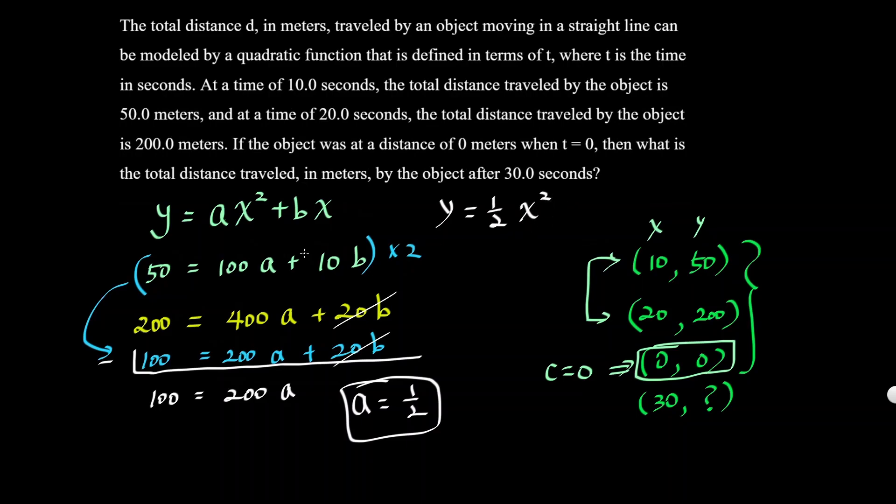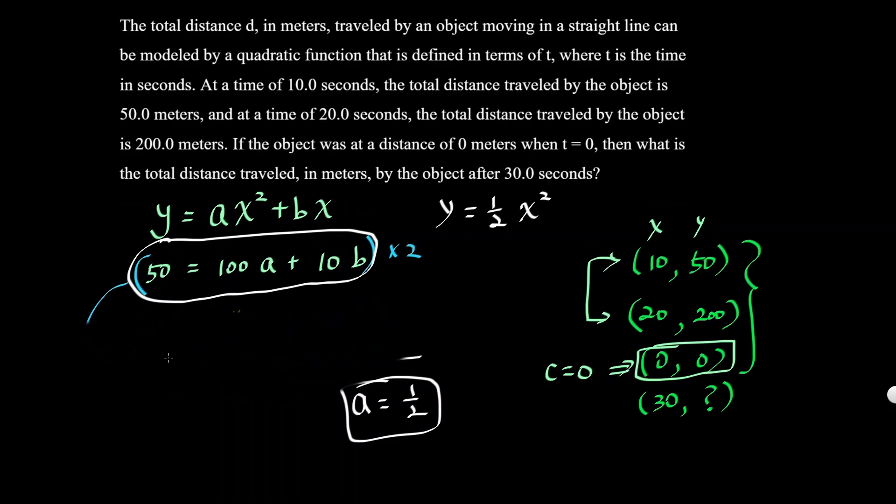We have to figure out what b is. Let's use this equation. If we plug in 1/2 for a, we have 50 = 100(1/2) + 10b. That's just going to be 50, so if you subtract 50 from the left side, 10b = 0, which means b = 0.